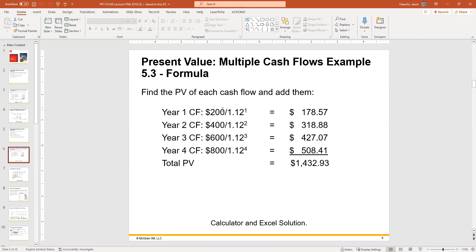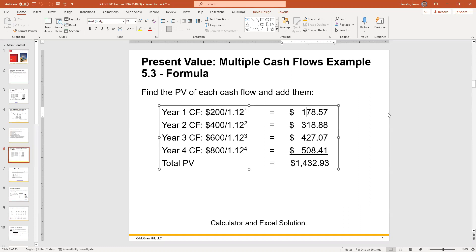So we start with the $200 for year 1, because it's a year in the future, you discount it by the 12%, 1 plus the 12%, exponent 1, and that's the present value of that amount. You do the same thing with the 400, but two periods, exponent 2, and you get 318 with 88 cents. Repeat the process with the next one, $600 for three periods, and then $800 for four periods, the present value. Once you add them together, the present value is 1,432.93.